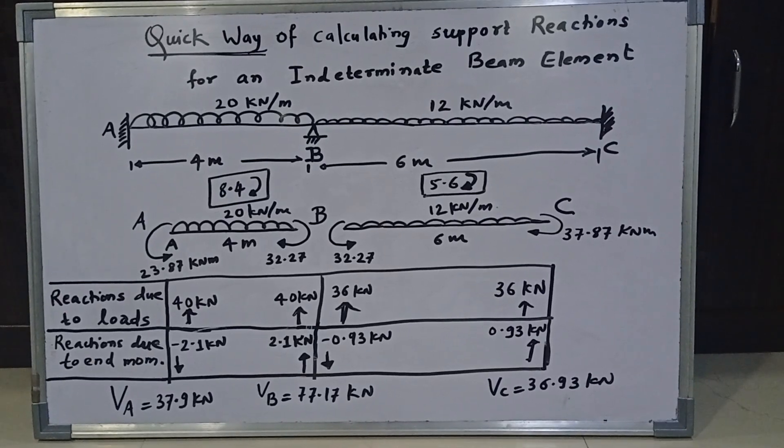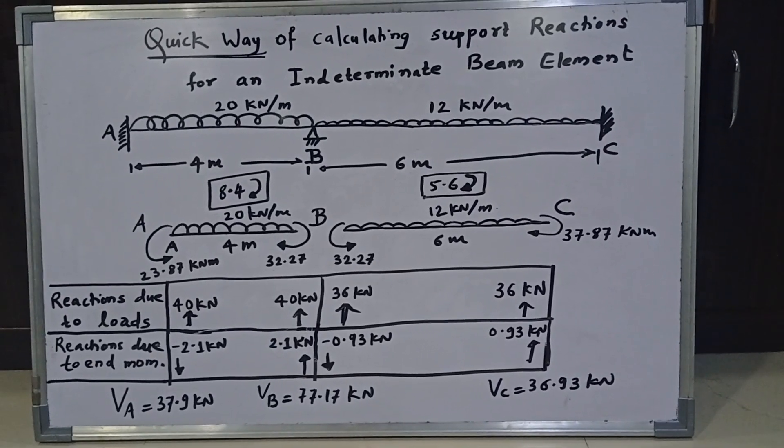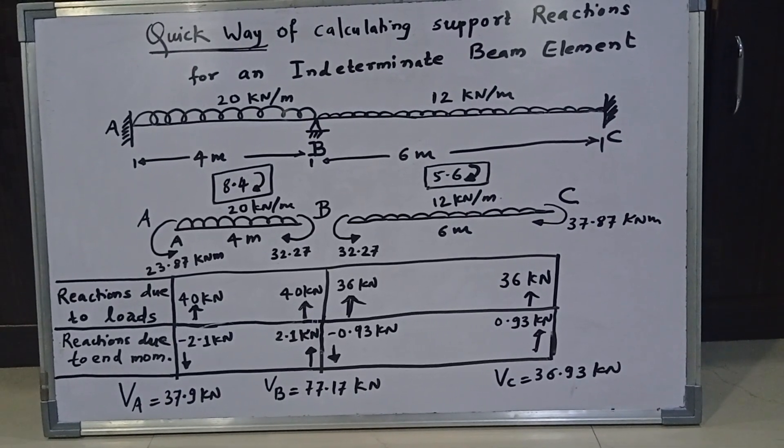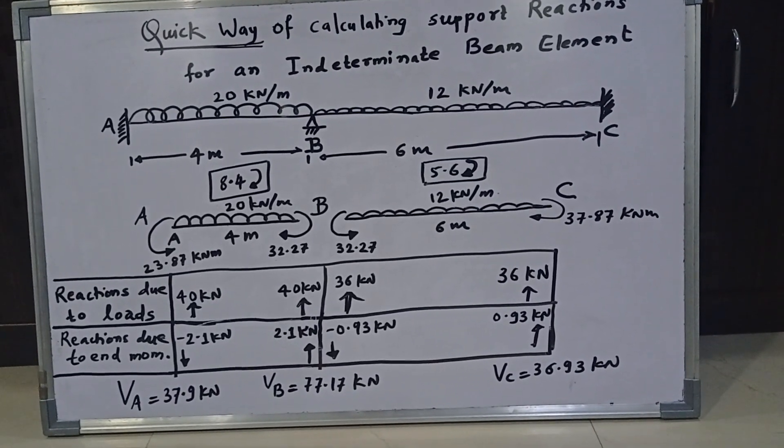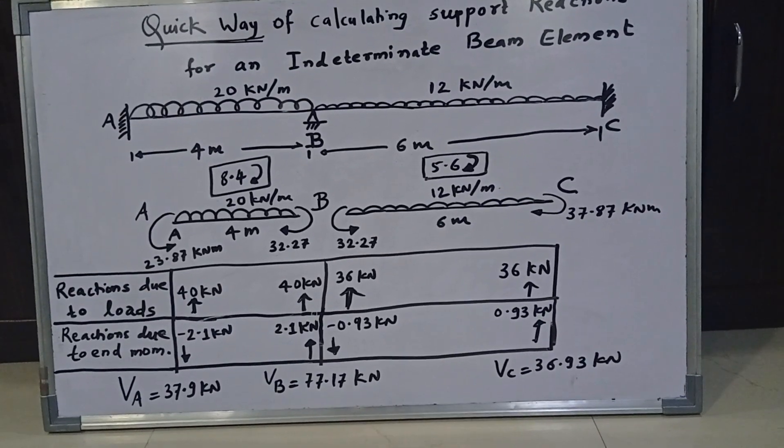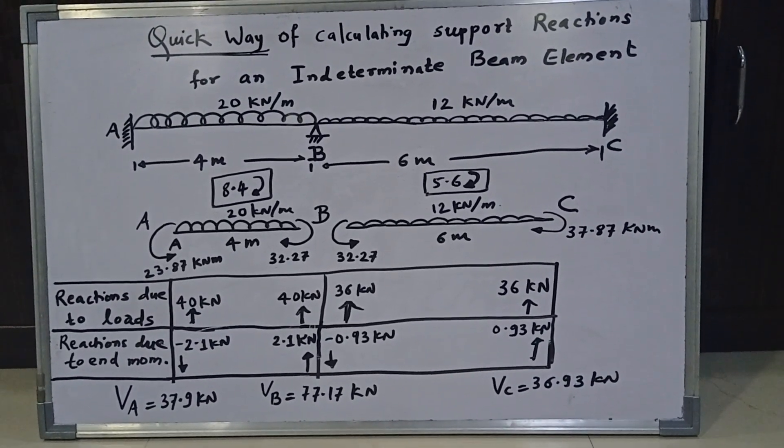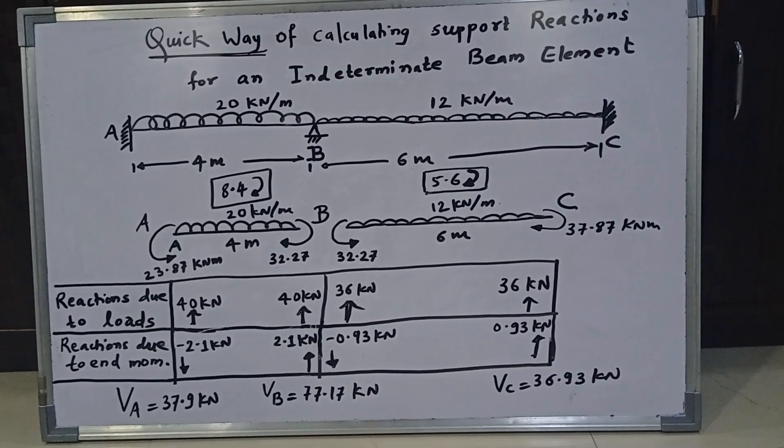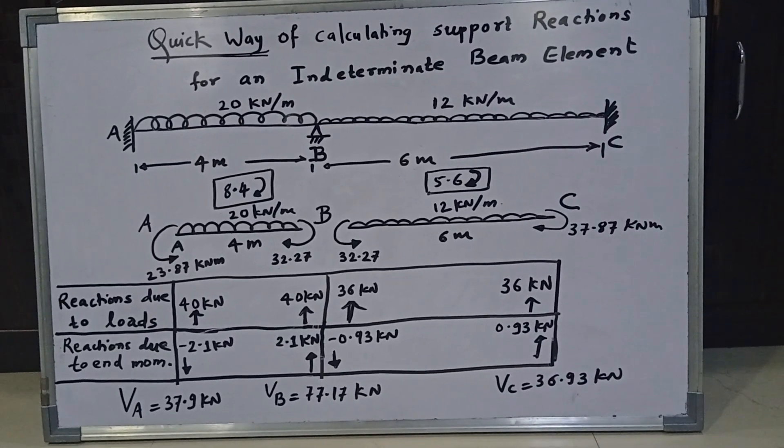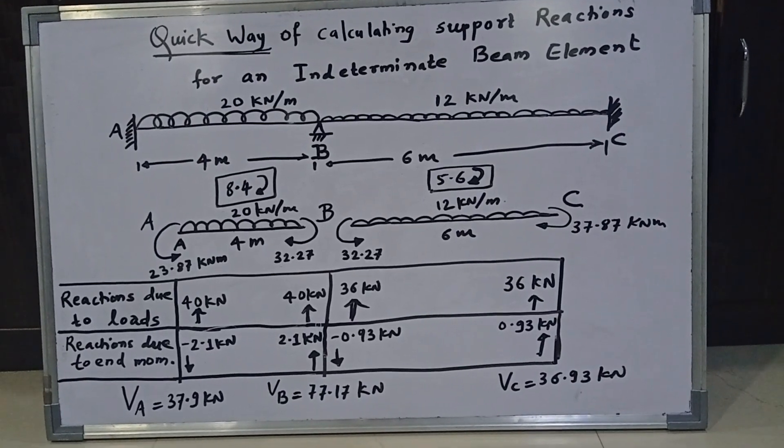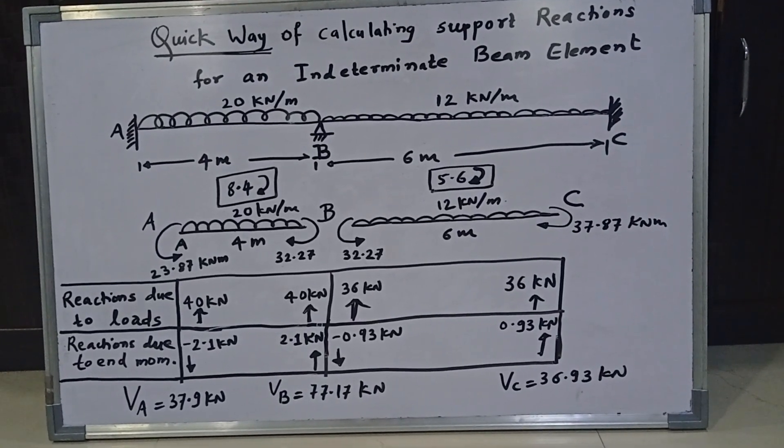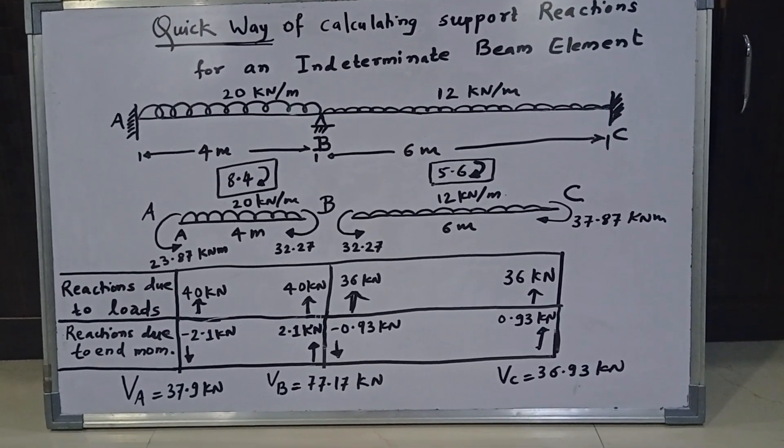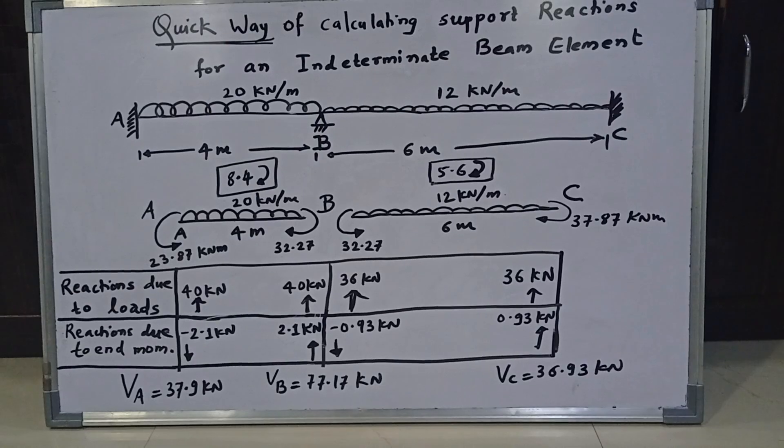Similarly, for span B-C again looking at the first row of the table only. For span B-C the total downward UDL is 12 into 6, that is 72 kN. And therefore, obviously it is 36 kN at B and 36 kN at C both upwards direction because load is symmetrical. So half reaction will be carried by one end and half the reaction will be offered by other end. Now going further.